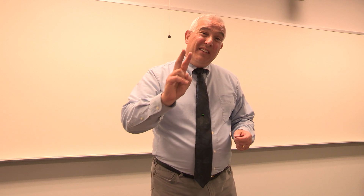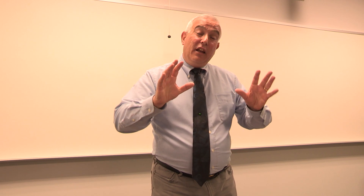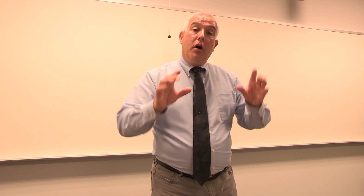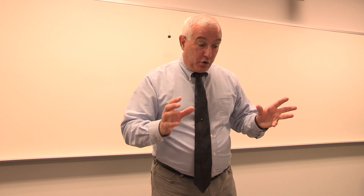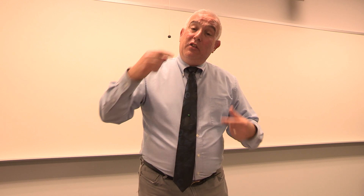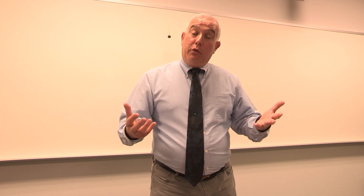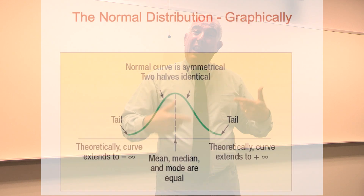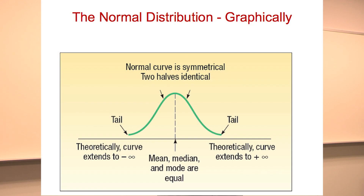The second principle is the idea that you can draw a picture of probabilities using a curve, like the very familiar bell curve of the normal probability distribution.